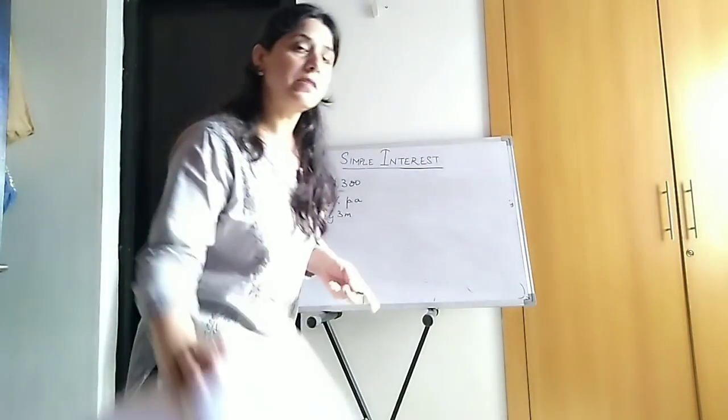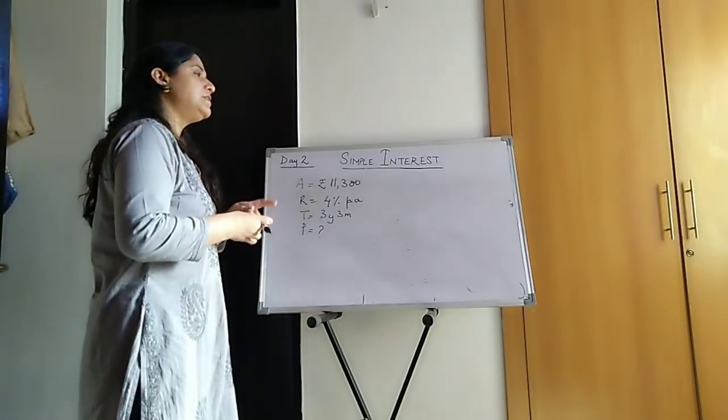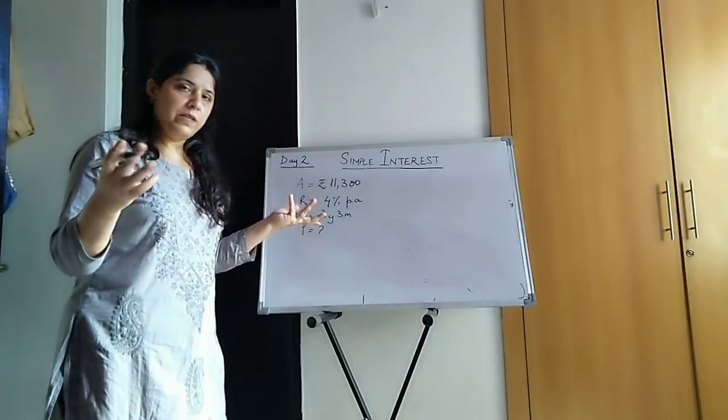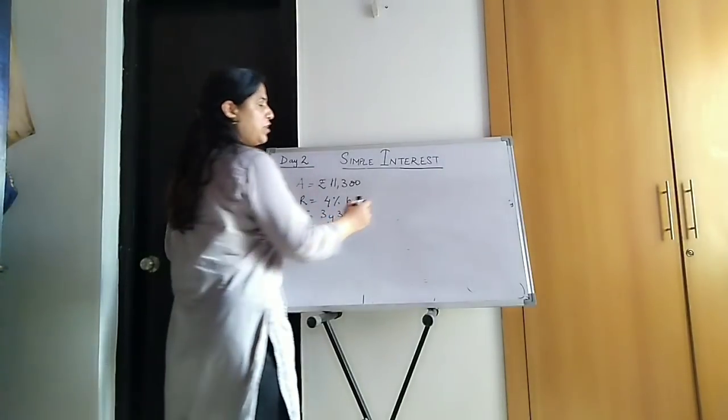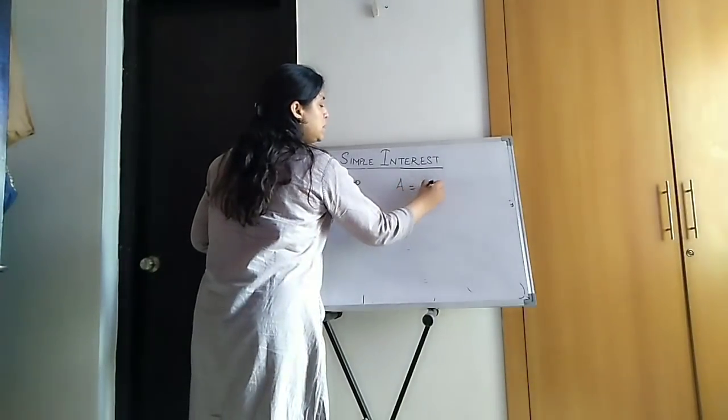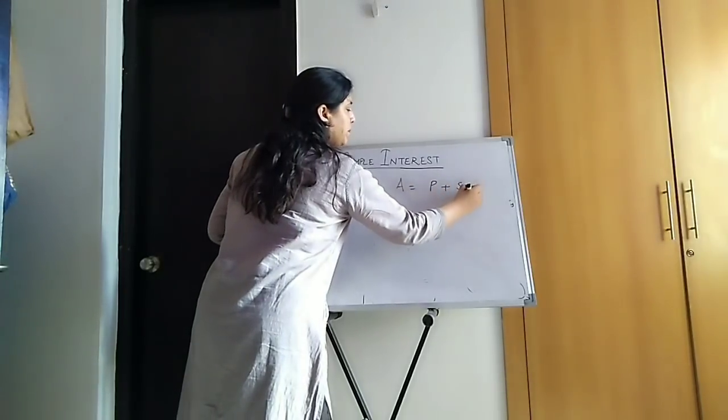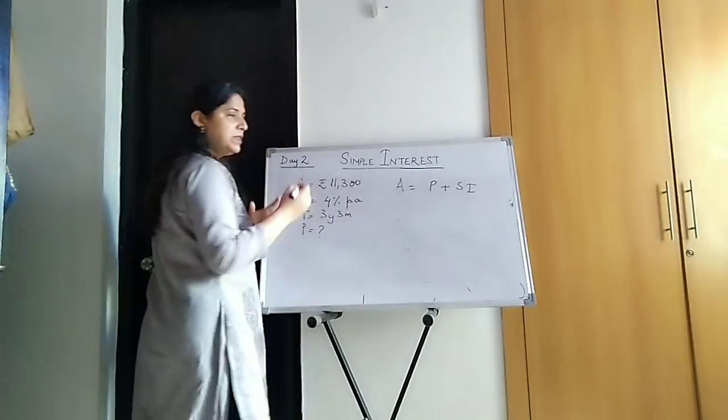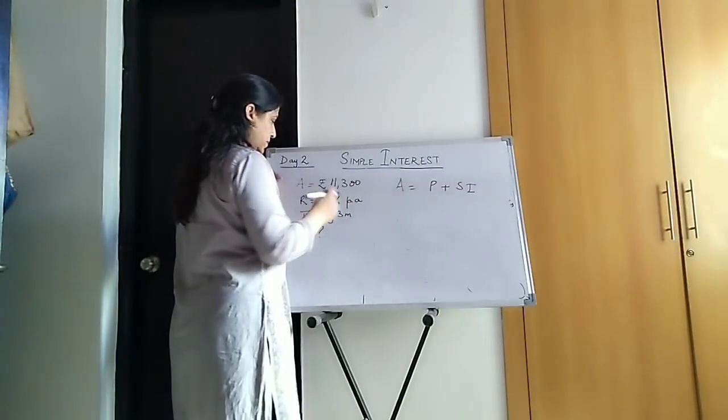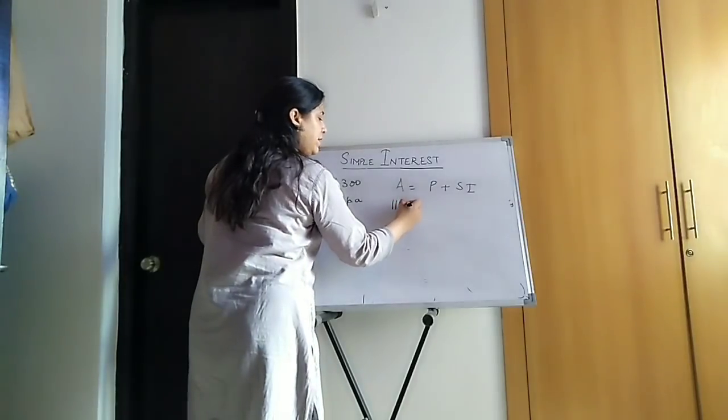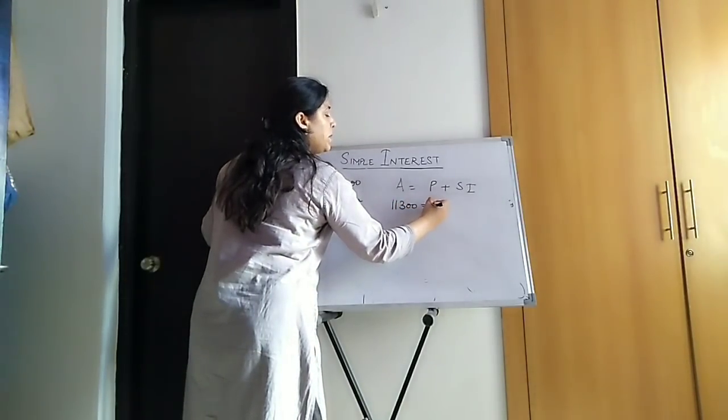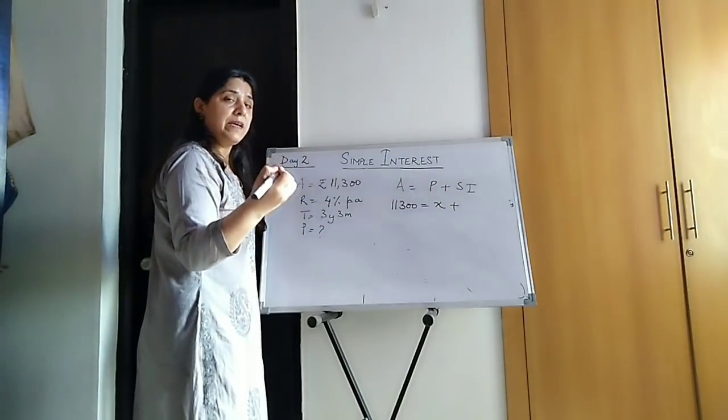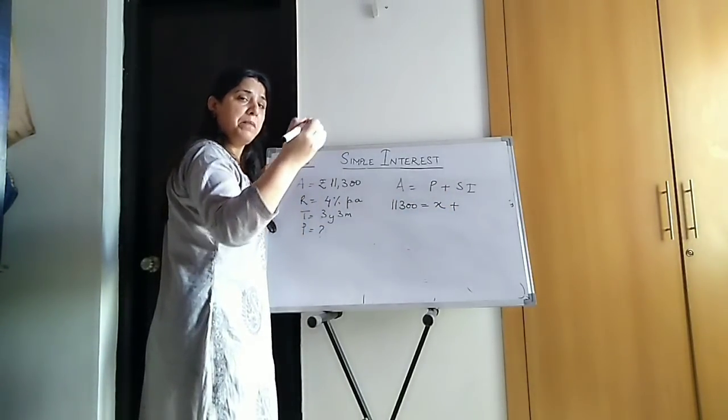Now, the simple interest is not given, children. What is given is the amount. There is no formula for this, you know. So which formula? The formula that we are going to apply is: Amount is P plus SI. And what is SI equal to? PRT upon 100. So let us take the principle as X here. Amount is 11,300 is equal to principle X plus SI. How will you find SI? SI is PRT upon 100.